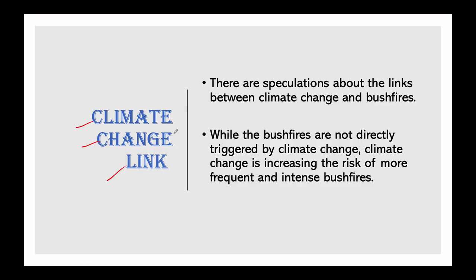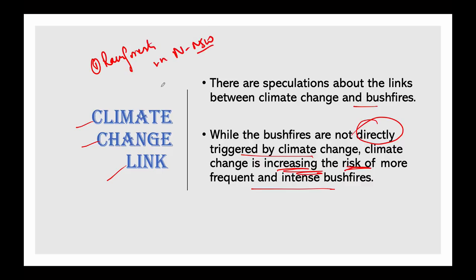Is there a climate change link? Bushfires are not directly triggered by climate change, but there is definitely an indirect role — climate change is increasing the risk of more frequent and intense bushfires. Fires are burning in places and at intensities never experienced before, for example in rainforests in northern NSW and tropical Queensland. Formerly even wet old-growth forest in Tasmania is seeing intense fires this year. The drought being faced is more intense than the millennium drought, with higher levels of evaporation due to higher temperatures, which has dried out the bush and made it easier for fires to start and spread very quickly.